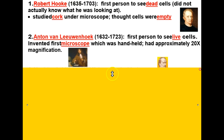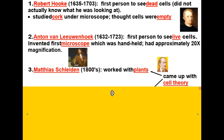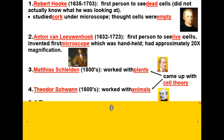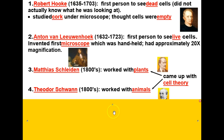Two scientists came after these guys in the 1800s and gained credit for having come up with the cell theory: Matthias Schleiden and Theodore Schwann. Schleiden worked with plants and Schwann worked with animals, and together they came up with what is known today as the cell theory.